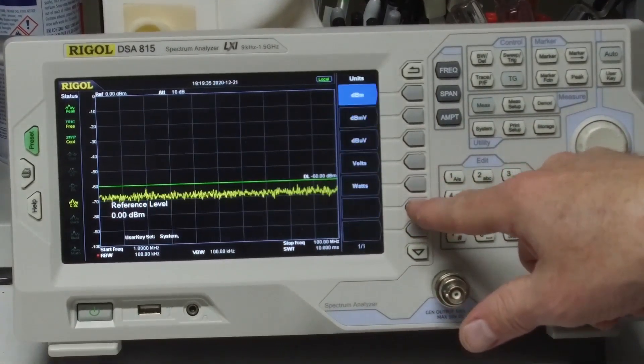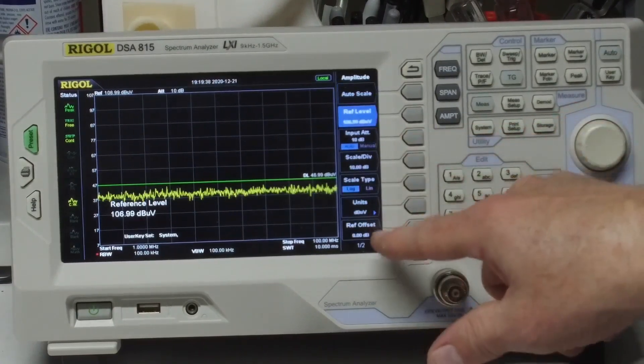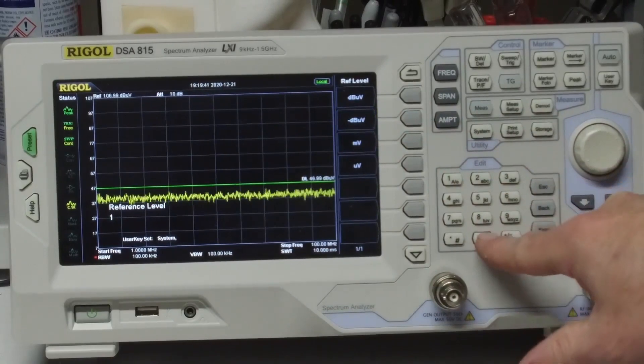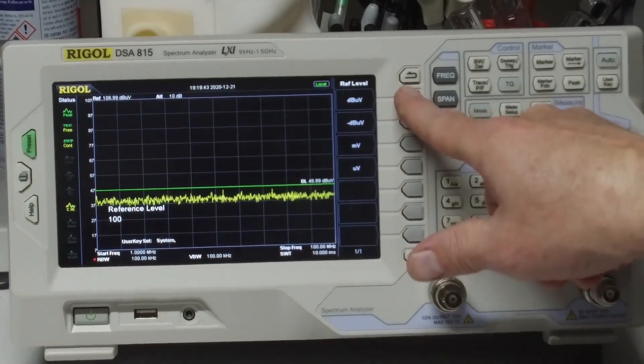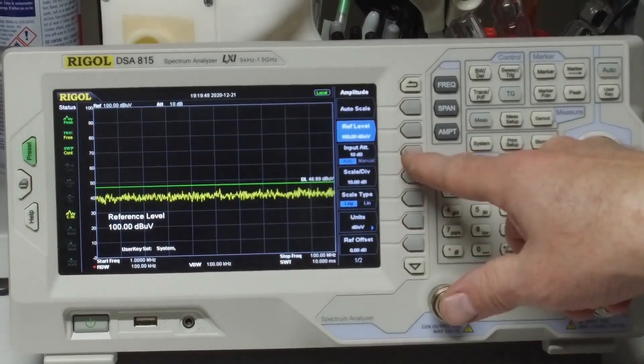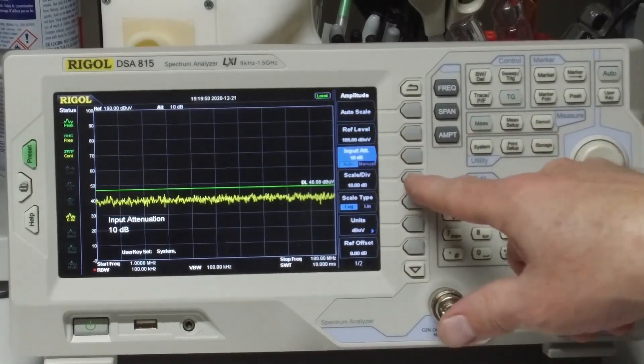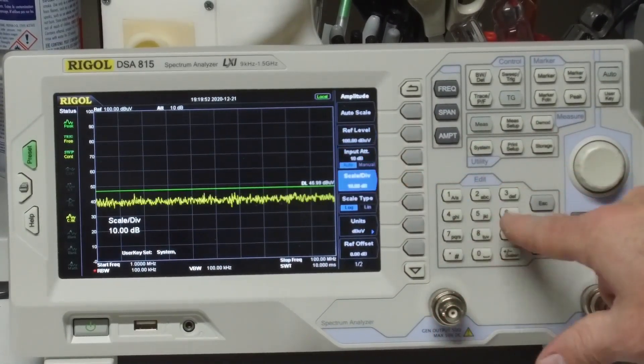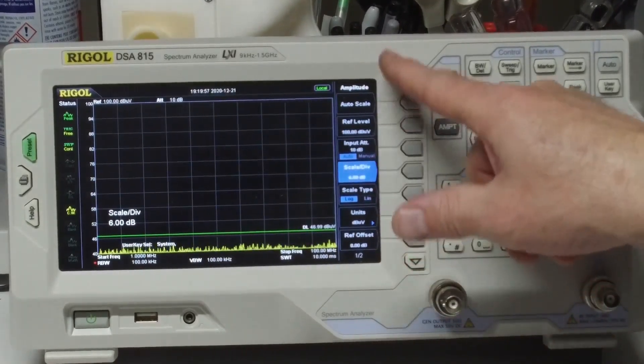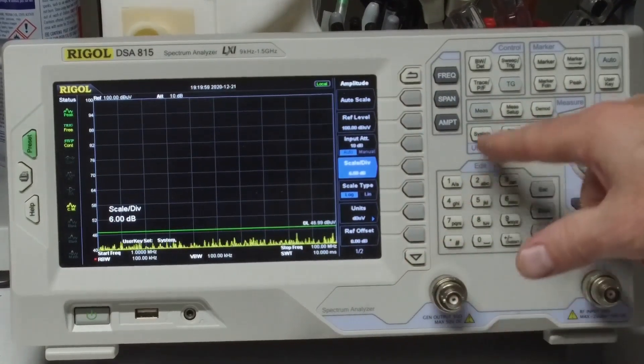We can leave the attenuator. Let's go to dB microvolts. Let's set our reference level to an even number, we're going to go to 100 dB microvolts. Let's set the scale to 60 dB microvolts. Okay, I think that looks good.